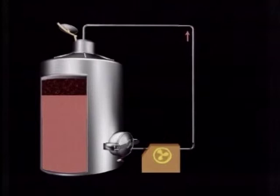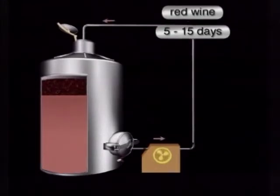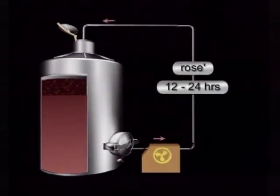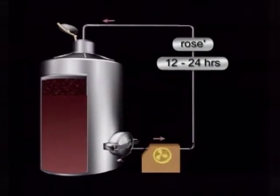The juice is drawn off from the bottom of the tank and then pumped back over the layer of grape skins to ensure proper contact between these and the juice. By controlling the time of this contact, we extract the desired amount of color from the skins.